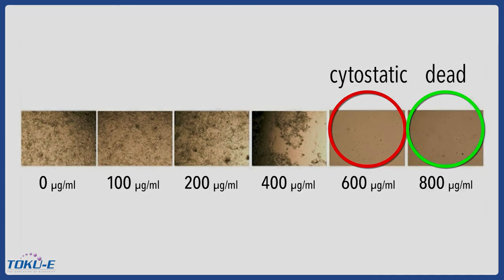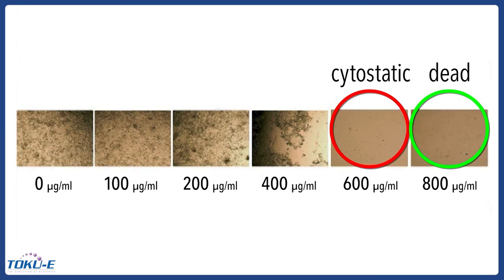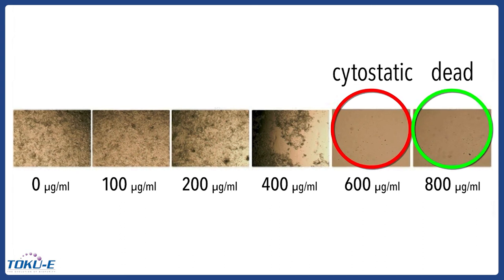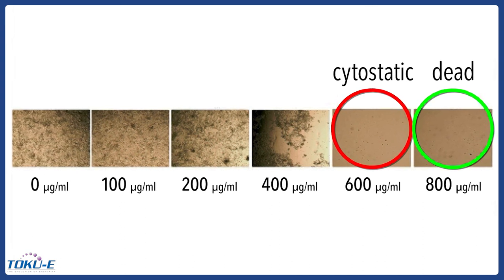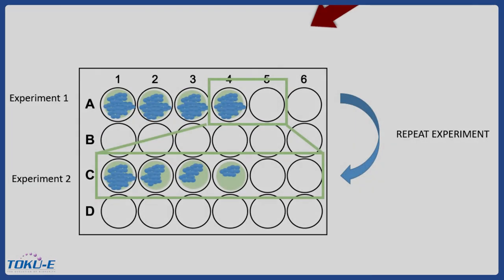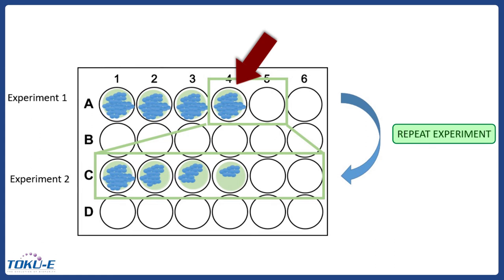Most cells may appear to be dead; however, some cytostatic cells may remain. If cytostatic cells are present, choose the next higher concentration to ensure all cells are dead. If the well next to the well that kills all cells has a relatively high cell density, it may be necessary to repeat the experiment to narrow the antibiotic concentration range.